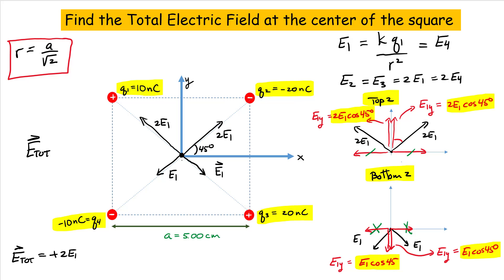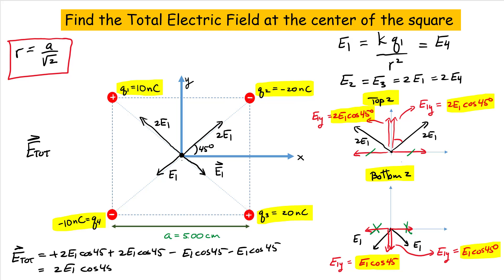Adding all four contributions as vectors: we get 2E1 cos(45°) plus 2E1 cos(45°) from the top pair, minus E1 cos(45°) minus E1 cos(45°) from the bottom pair. This simplifies to 4E1 cos(45°) minus 2E1 cos(45°), giving a final expression of 2E1 cos(45°). Let's go to the next page, finish this problem, and calculate some numbers.